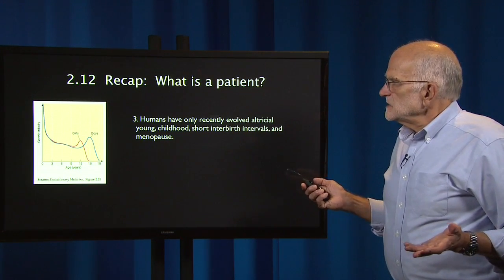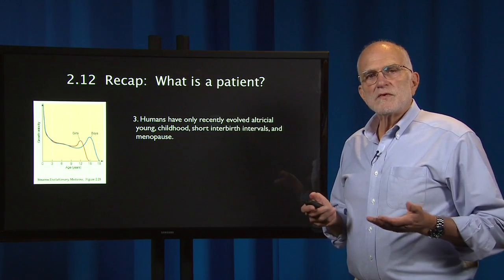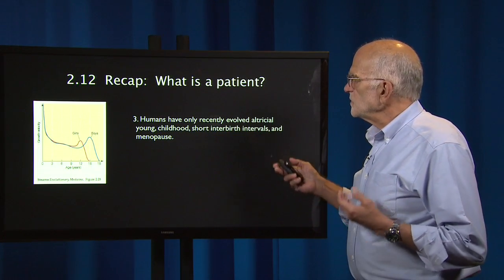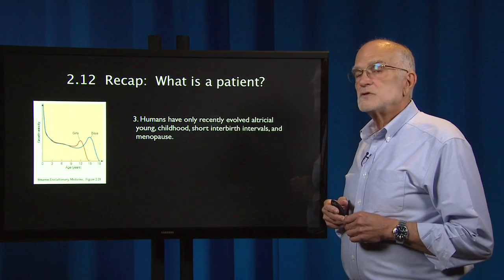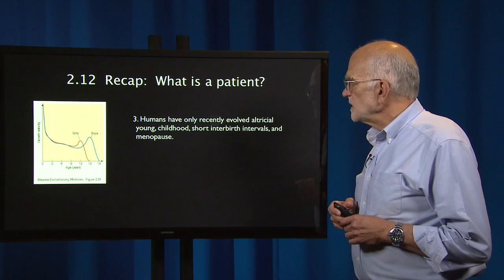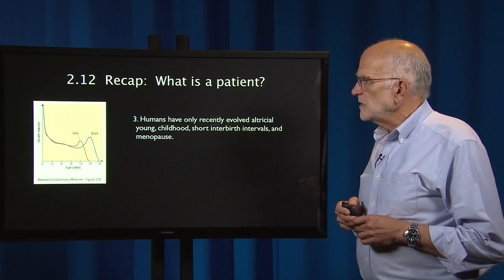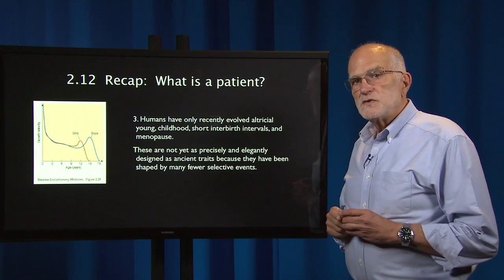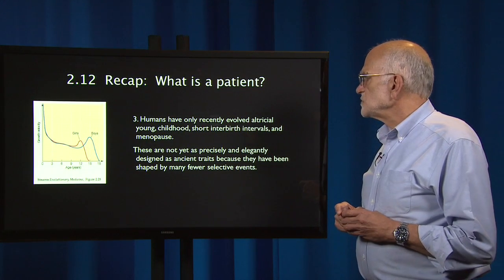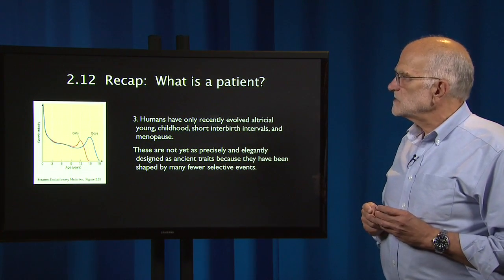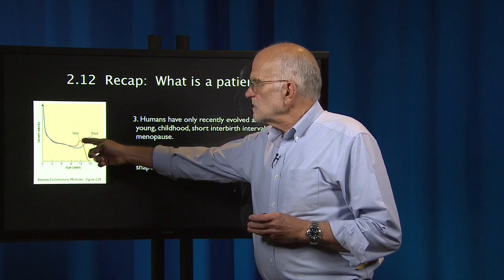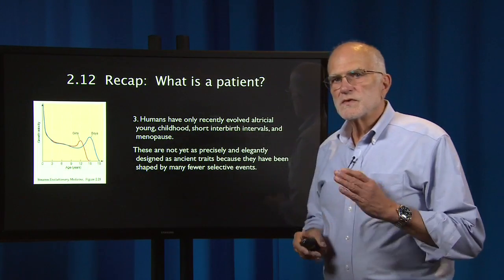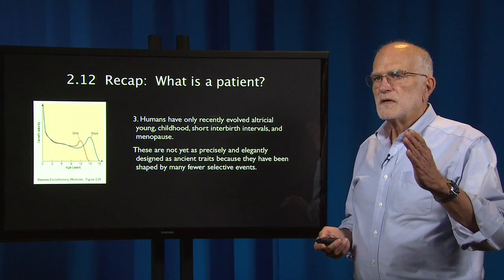Another feature of patients is that they have a particular life history, and the human life history is unusual. Humans have only recently evolved altricial young, childhood, short interbirth intervals, and menopause. They are not yet as precisely and elegantly designed as ancient traits because they have been shaped by many fewer selective events. And you can see that girls and boys have also evolved very different growth trajectories, with girls maturing earlier than boys.